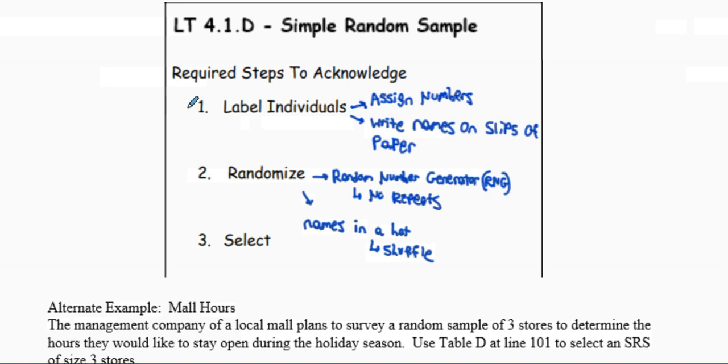You want to start off by labeling the individuals. When you label individuals, you always want to make sure that you assign numbers whenever you're writing out your procedures. In order to do a simple random sample or SRS, make sure that you assign numbers to all of the participants in the population. You could also, if you don't want to do this route by assigning numbers, write their names on slips of paper and do it that way depending on how many people you have. Normally I assign numbers.